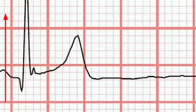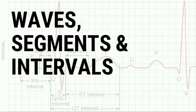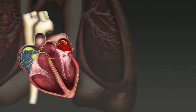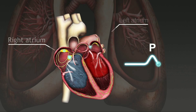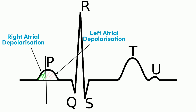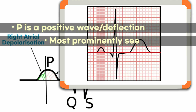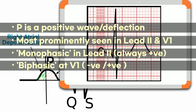Now let us quickly discuss waves, segments, and intervals. The five waves of an ECG are P, Q, R, S, and T. The P wave is produced as the electrical impulse travels through the atria, causing them to contract — it corresponds to atrial depolarization. One third represents right atrial depolarization, while two thirds show left atrial depolarization, because the left atrium is thicker. P wave is above the baseline, hence it is a positive wave, and is most prominent at lead 2 and V1. However, P is biphasic at V1 and could possibly be negative there; otherwise it's always positive.